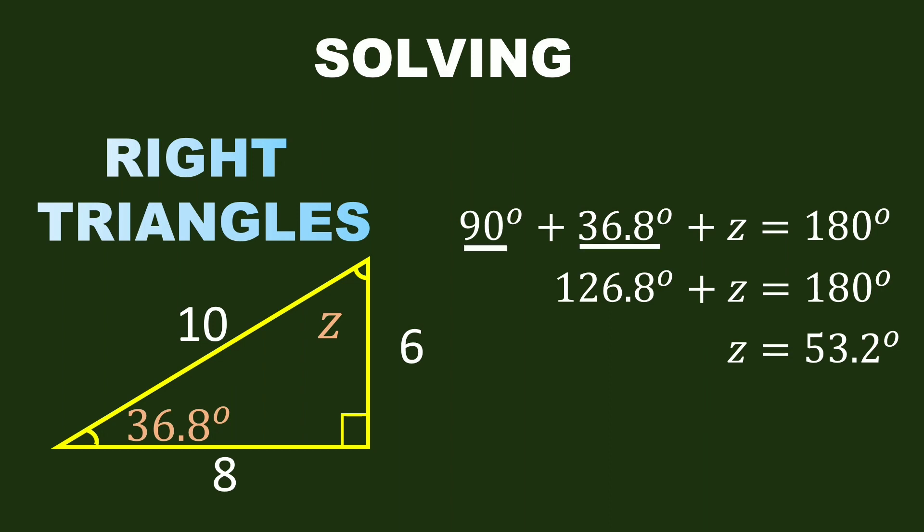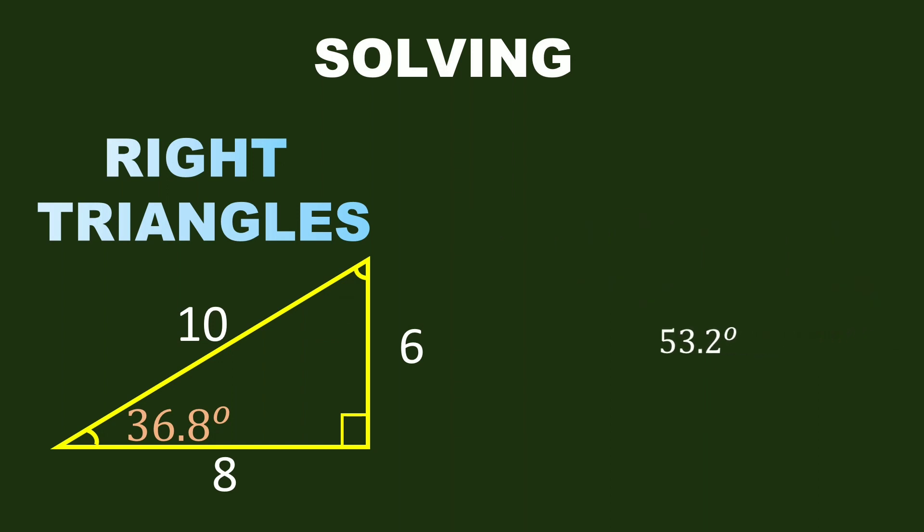90 plus 36.8 is 126.8 degrees plus z equals 180 degrees. Now we can subtract both sides by 126.8 degrees. So the value for angle z is equal to 53.2 degrees.